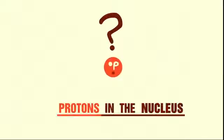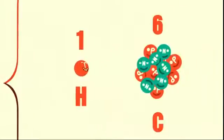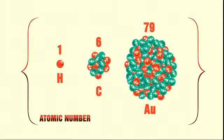The identity of an atom is determined only by the number of protons in its nucleus. Hydrogen is hydrogen because it has just one proton. Carbon is carbon because it has six. Gold is gold because it has 79, and so on.